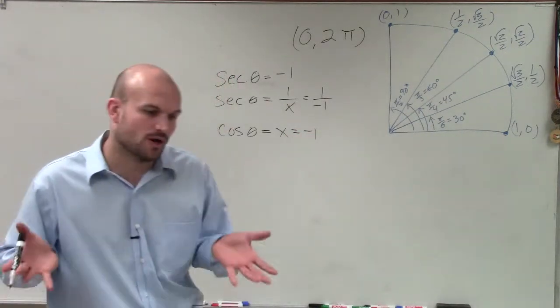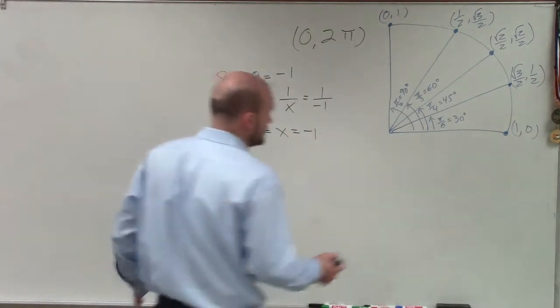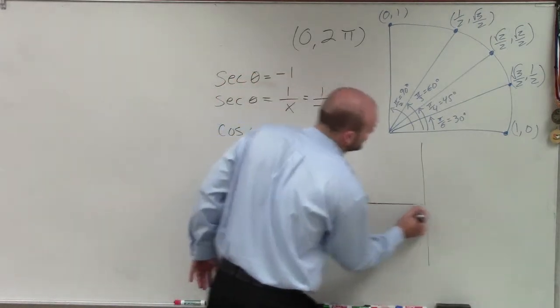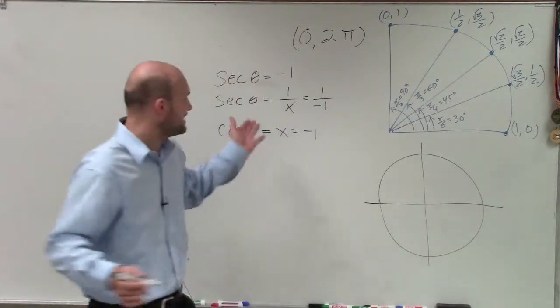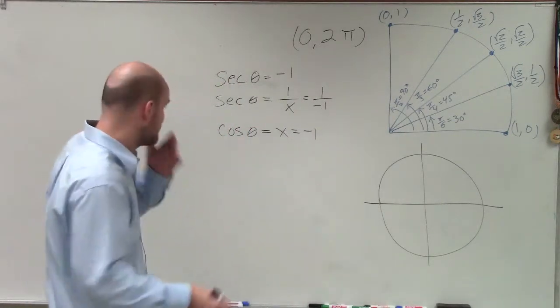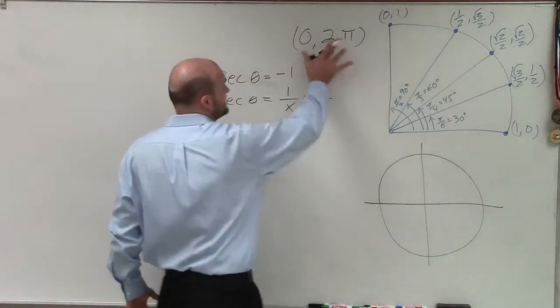So I need to look at this and determine, well, where on this unit circle is my cosine of x equal to negative 1? Because that's going to be really the same thing as far as finding the secant of negative 1. And that angle has to be between 0 and 2 pi.